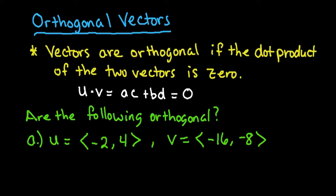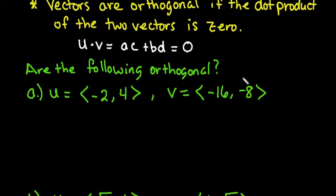Let's do a couple of examples just to check to see if they are orthogonal. The first one that we have is u is equal to the vector <-2, 4> and v is equal to the vector <-16, -8>.